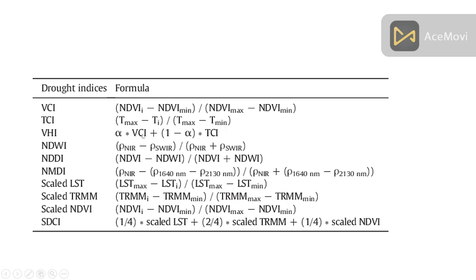To calculate VSI, first we need to create the VCI and TCI, then combine them using the VSI formula. VCI is calculated as: NDVI pixel value minus NDVI minimum pixel value, divided by NDVI maximum pixel value minus NDVI minimum pixel value. So from your NDVI map, you identify the minimum and maximum pixel values to compute VCI.